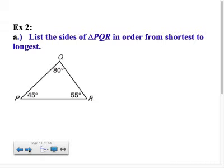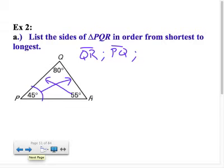So it says list the sides of PQR in order from shortest to longest. All you're doing is identifying angles first, so your smallest angle is 45, which means your shortest side is QR. PQ is your middle side. And your longest side here is obviously going to be PR because it's across from the 80. So pretty basic idea.